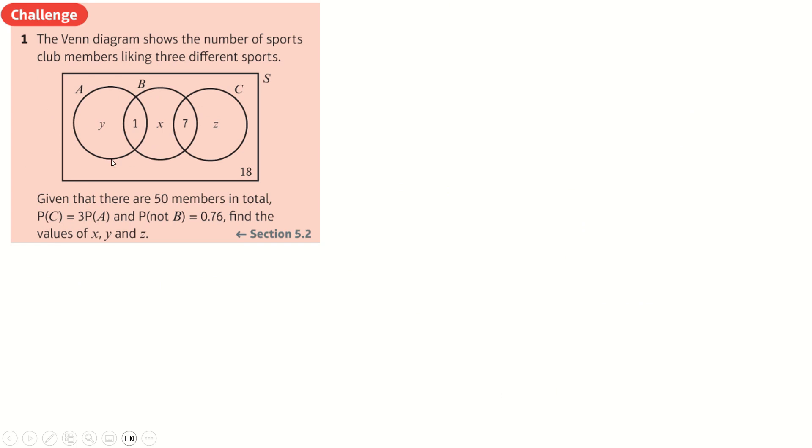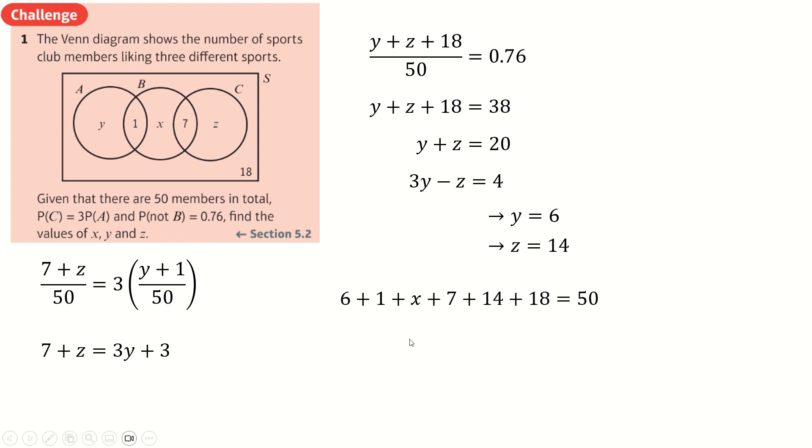Next, we have another Venn diagrams question. I'm pretty sure this one is even easier than the last one. 50 members in total, p of c, 3 p of a, so therefore z plus 7 is 3 lots of y plus 1. Now, everything's over 50, right? I didn't need to do that, because I'm just going to times by 50 anyway. Whatever. Anyway, p of not b, which is y plus z plus 18, I guess over 50, is equal to 0.76. So cool. Times that by 50 times this by 50. This is a simultaneous equation that I'm not going to bore you with. You get two answers. You use those two answers just like before to find the third answer, and we're done with that as well.